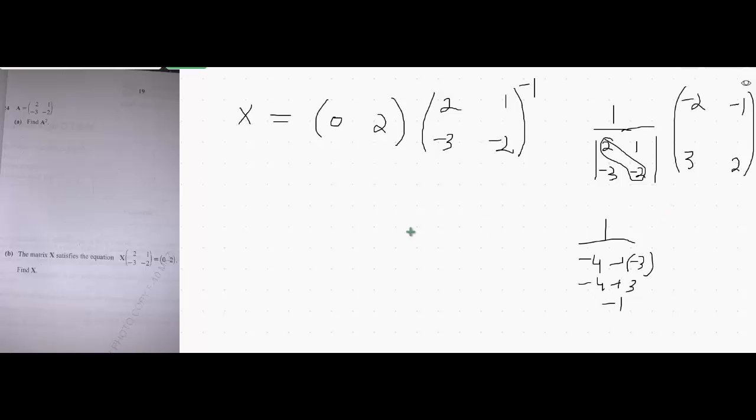Therefore, the inverse will be, I will write inverse over here: 0 and 2. Inverse is 1 over minus 1, 1 over minus 1 into this matrix which is adjoint matrix.